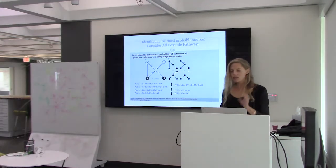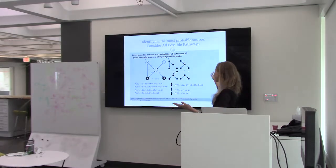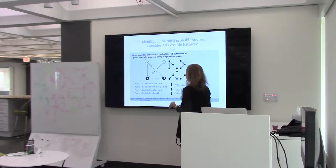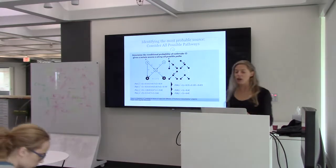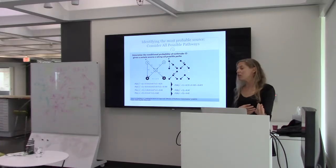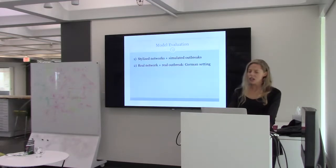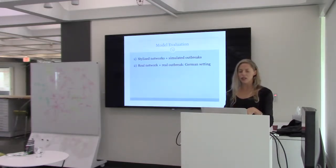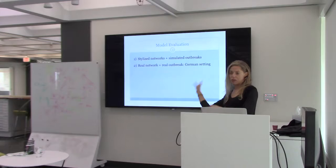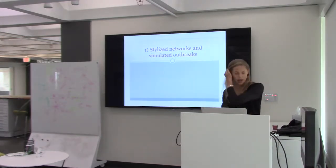In the interest of time, I'm not going to go through the toy example in detail — it's in our paper, and it's just a simple example to show the value of considering multiple paths. If we only look at the highest probability path in the network, we don't get the same result as if we go through all the paths. Now I'll show this evaluated first on stylized networks to make a small point, and then on the Germany network and the real data.